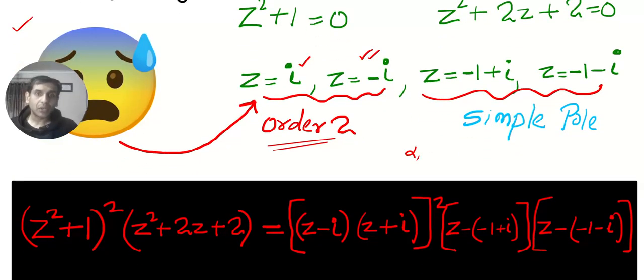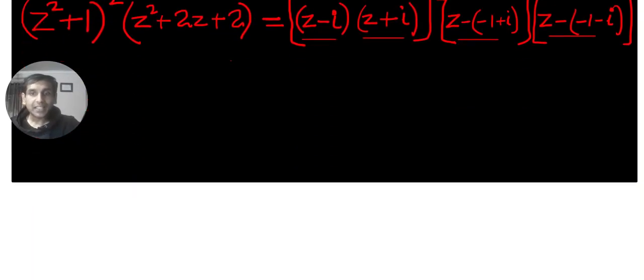And I am using a calculator. If you don't have a calculator, you can use the formula minus b plus minus root under b square minus 4ac by 2a. Anyhow, I got two more poles. This will be the factorization. If the roots are alpha, beta, gamma, delta, the factors will be z minus alpha, z minus beta, z minus gamma, z minus delta.